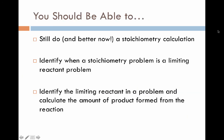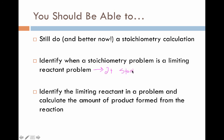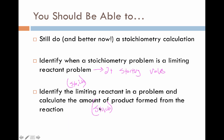Let's wrap this up. At this stage you should still be comfortable with stoichiometry — if not, practice, practice, practice. You should also be able to identify when a stoichiometry problem is also a limiting reactant problem: the signal is two or more starting values given. When there are multiple starting values, you don't know which chemical runs out first and must treat it as a limiting reactant problem. Finally, you should be able to identify the limiting reactant using stoichiometry and calculate the amount of product formed. We'll do more of these in class, so please write down any questions and bring them in.